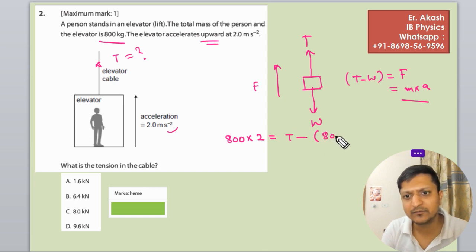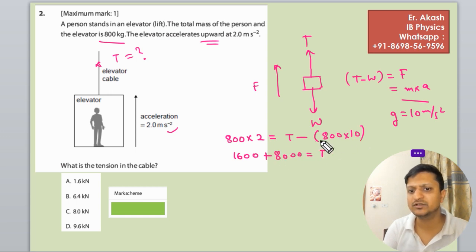800 into 10. We have taken g equals to 10 meters per second squared, so it will become 1600 plus 8000 equals to T. So it will become 8000, it will go to the left hand side.